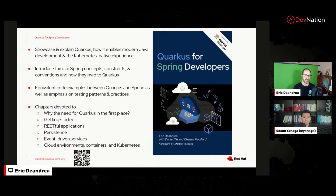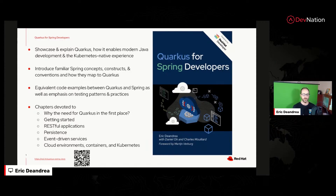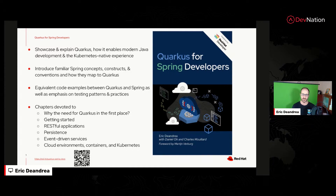We use the same example throughout, and each chapter adds on to it. We added persistence — looking at Spring Data JPA and Quarkus's Panache, which is an abstraction on top of JPA, just like Spring Data JPA is. You'll find some of the patterns are very similar. Then we look at event-driven services — things like in-memory data buses, Kafka events, producers, consumers, Knative — and how to deploy services into Knative. Then how do you operate your application? Containers, Kubernetes, deploying to the cloud. I also need to give credit to Daniel O. and Charles Mouliard, who helped co-author chapters five and six.